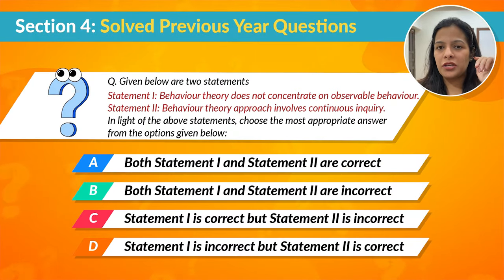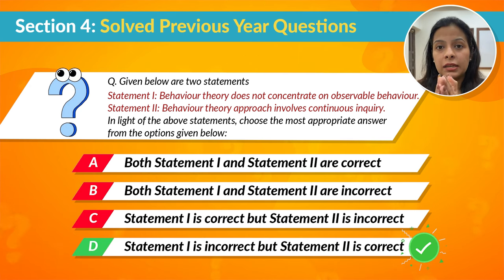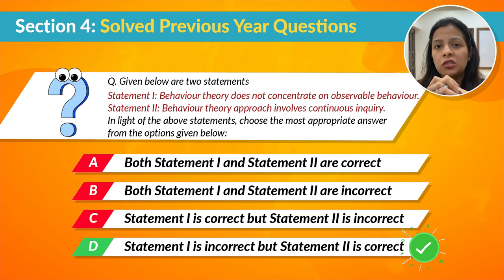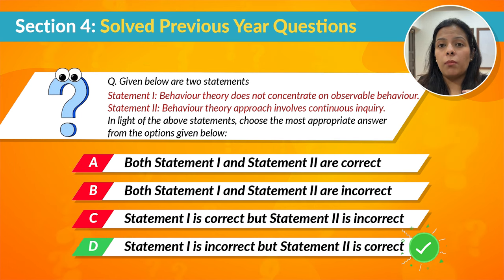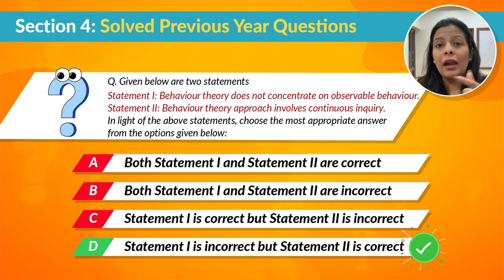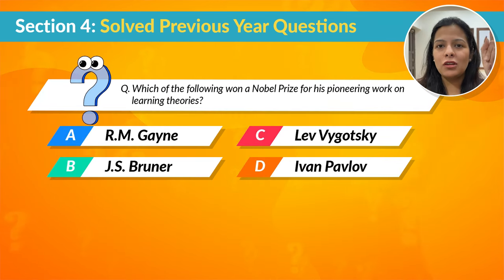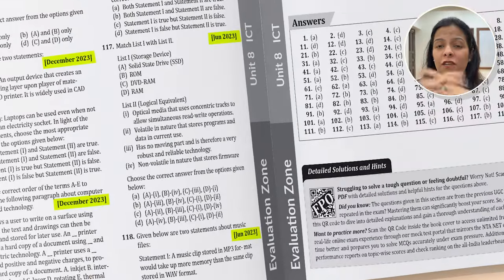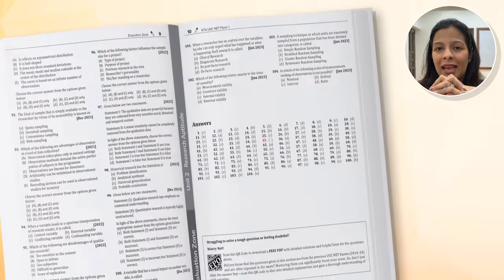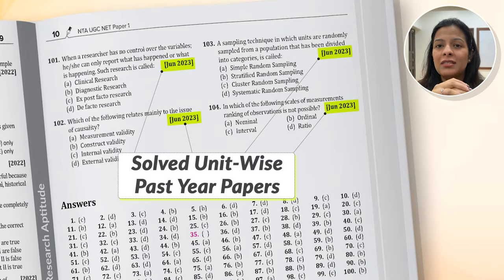Now let's look at question number one — it's right there on your screen. The correct answer is: statement one is incorrect, but statement two is correct. Statement one is wrong because behavioral theory is all about studying actions that we can see and measure — it focuses on how people behave based on things happening around them. Statement two is correct because behavioral theory involves learning more about how behavior is shaped or formed, and researchers keep studying and testing these ideas to understand it better. I have another question for you on your screen — if you know the correct option, please comment down below. For more PYQs on this topic, you can refer to the unit-end questions in our UGC Net Paper 1 book.